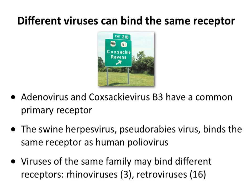A herpes virus of pigs called pseudorabies virus binds the same receptor as poliovirus — completely coincidental, as these viruses are totally different. This shows there are a finite number of receptors on cell surfaces, so viruses overlap. Conversely, viruses in the same family can bind different receptors: rhinoviruses have at least three different receptors, and retroviruses at last count have 16 different receptors. There is simply no one-to-one relationship.